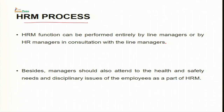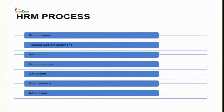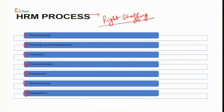The process of human resource management can be performed entirely by line managers or by HR managers in consultation with line managers. HR functions range from procurement to retention and evaluation of human work. The steps in the HRM function are procurement, training and development, induction, compensation, evaluation, maintenance and integration, which together result in right staffing.